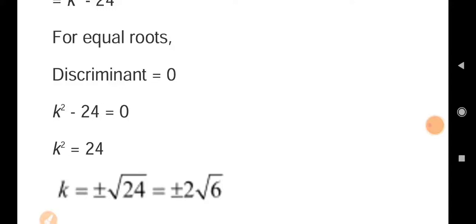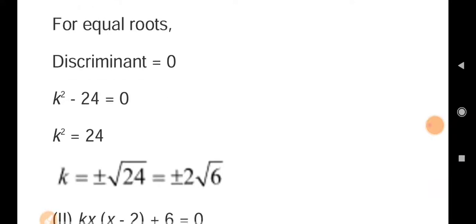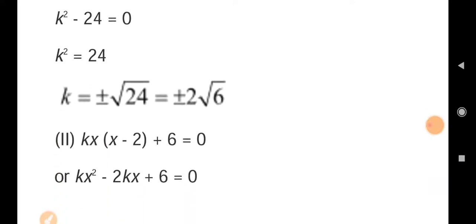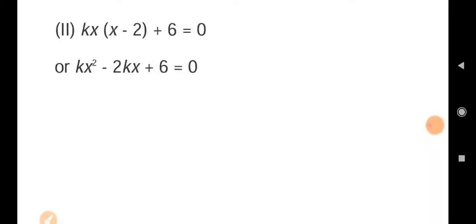From k square equals 24, we get k equals plus or minus under root 24, which simplifies to plus or minus 2 under root 6. That is the answer for the first part. Now for the second part of question 2: kx(x minus 2) plus 6 equals 0.